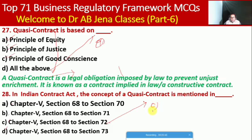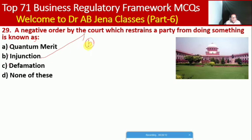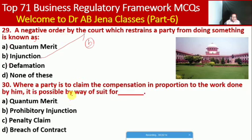Next MCQ: a negative order by the court which restrains a party from doing something is known as what? Whether point of merit, injunction, defamation, or none of these. Here B is the right option — it is called an injunction. Next MCQ: where a party is to claim compensation in proportion to the work done, it is possible by way of a suit for quantum meruit.